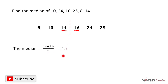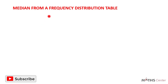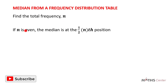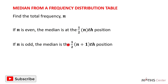So far we've considered how to find the median of a set of numbers. Let's learn how to find the median from a frequency distribution table. To get the median from a frequency table, find the total frequency, which is n. If n is even, the median will be at the n/2 position. If n is odd, the median will be at the (n + 1) / 2 position.